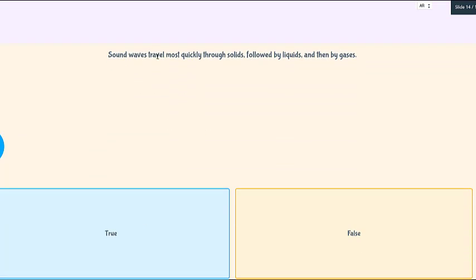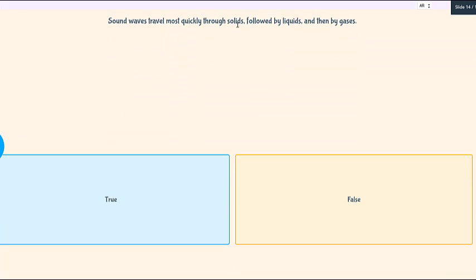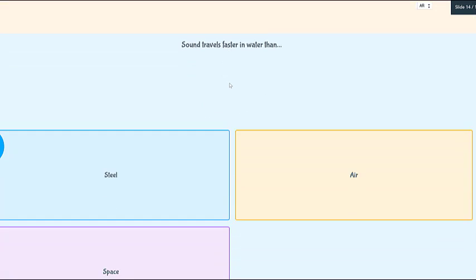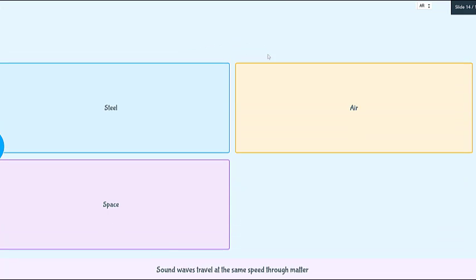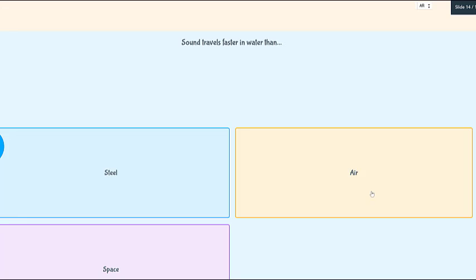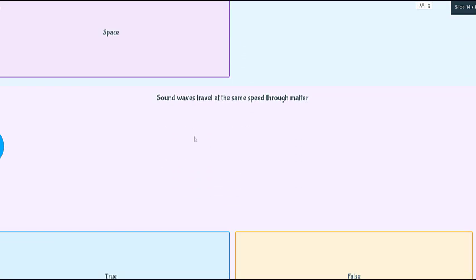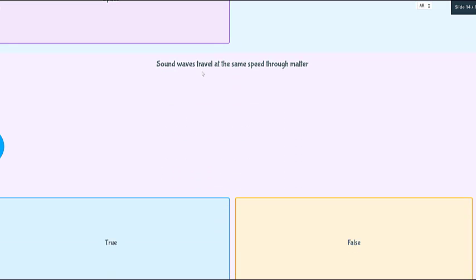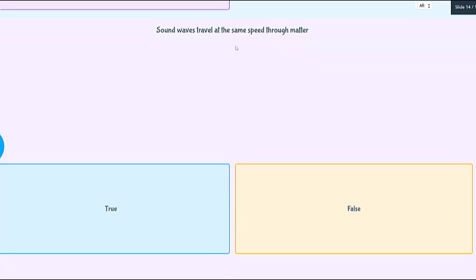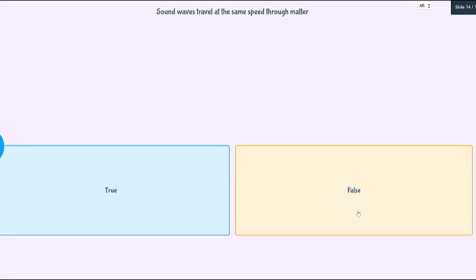And sound waves travel most quickly through solids followed by liquid and then by gases. True also. Sound travels faster in water than air. And finally, sound waves travel all at the same speed through matter. No, they travel at different speeds through matter or medium, so it's false.